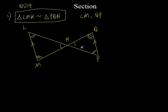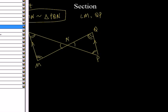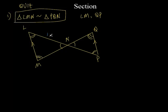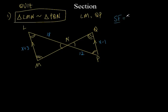But the first thing you had to do was solve for x. So let's put some numbers in here and change colors to make it a little different. They said that this is 18, this right here is x plus 3, this is 12, and x minus 1. What you have to do is find what x is, and then you've got to find these lengths — LM.